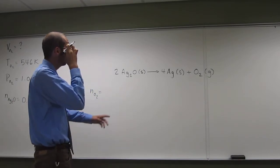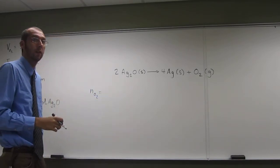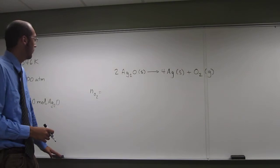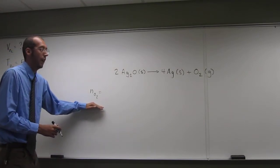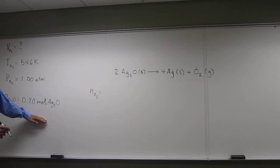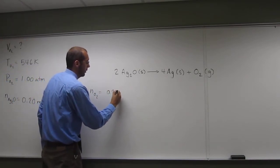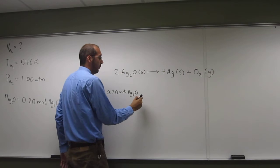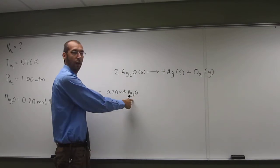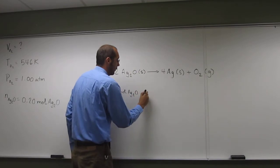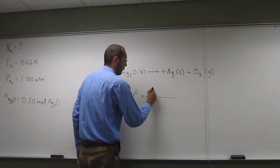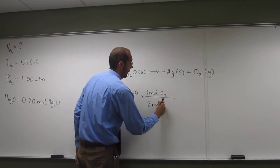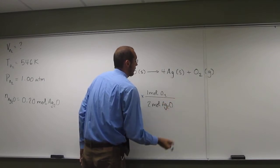The number of moles of oxygen, remember, do you remember the stoichiometric relationship that we get from the balanced chemical equation? Why don't you help me out? So, how do we do this? The number of moles of oxygen, we're going to have to use this number first, right? So, 0.20 moles silver 2 oxide. But we're going to have to multiply that by something, because we don't want the moles of silver 2 oxide, we want the moles of oxygen, right? 1 mole of oxygen over 2 moles of silver 2 oxide.